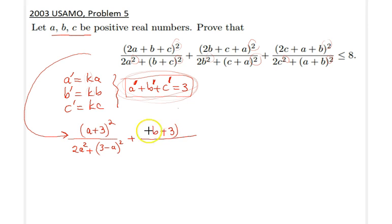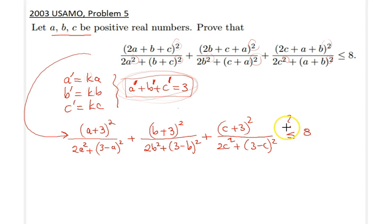Similarly (b+3) squared over 2b squared plus (3-b) squared, plus (c+3) squared over 2c squared plus (3-c) squared. This whole thing is less than or equal to 8.